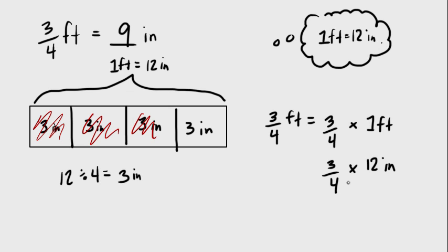12 times 3. We could cross cancel for doing multiplication. We can cross cancel these, so 4 goes into itself one time, 4 goes into 12 three times, and 3 times 3 is 9 inches. So that's how that's the math that's happening. That is the math that's going on.